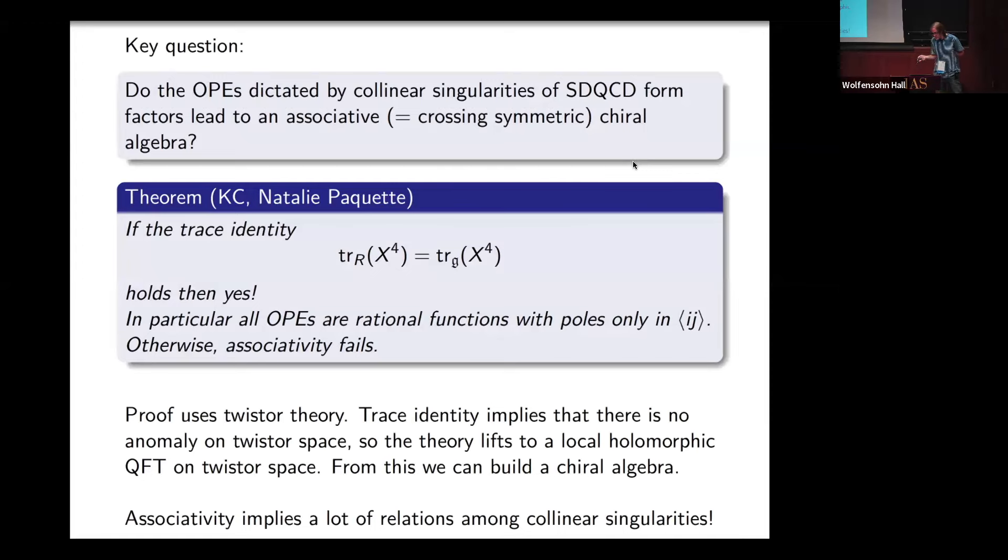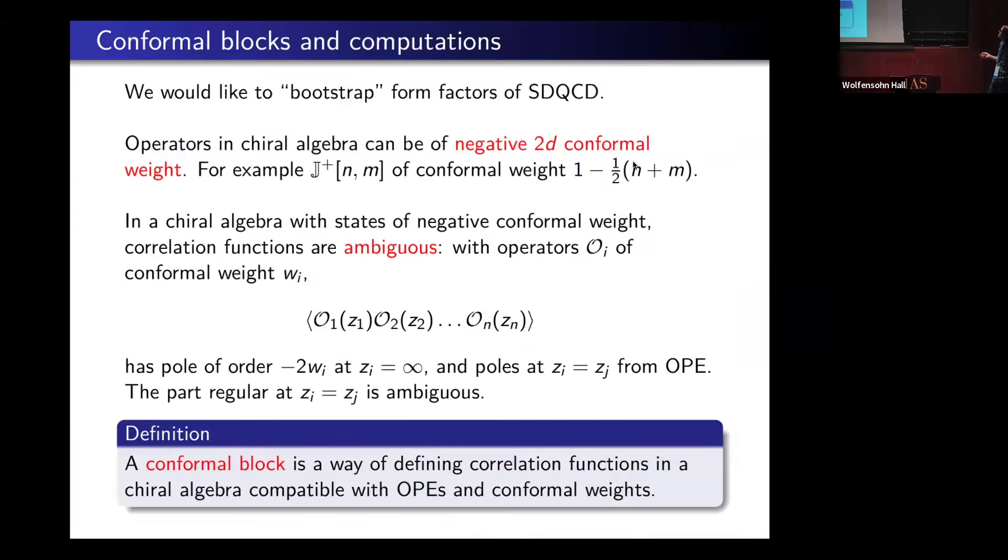I've spent a lot of time explaining how to translate collinear singularities into OPEs. We want to bootstrap form factors using these techniques. Form factors are going to be correlation functions of my chiral algebra. But you might notice there's something a bit funny. If I want to talk about a form factor, you have to specify a local operator. So there must be a similar ambiguity in defining correlation functions.